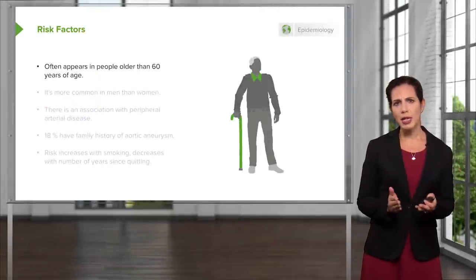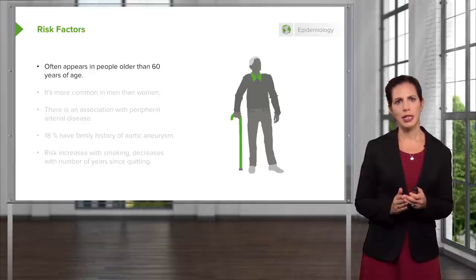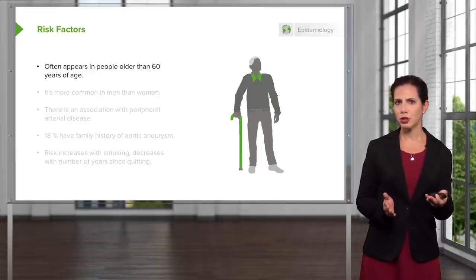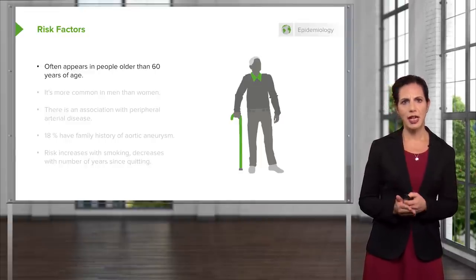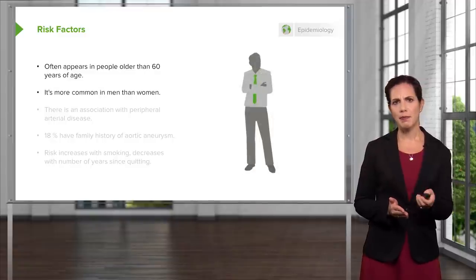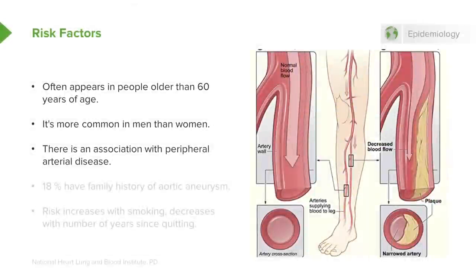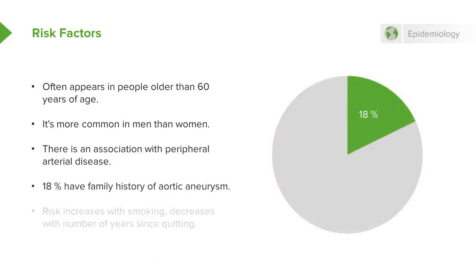So what are the risk factors? What makes us think about this more in a patient? It appears in older people generally — older than 60 years of age — and it's more common in men rather than women. Oftentimes there's associated peripheral arterial disease, so patients may have a known history of claudication in their legs or decreased blood flow to their legs, or possibly have had procedures related to that. Approximately 18% have a family history of aortic aneurysm, indicating a potentially familial relation.